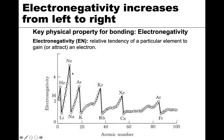The electronegativity values range from around one up to around five. Going across the periodic table from left to right — for example, lithium to neon — the values increase, then reset and go back down for the next period. Going up the periodic table, we also see a slight increase in electronegativity.